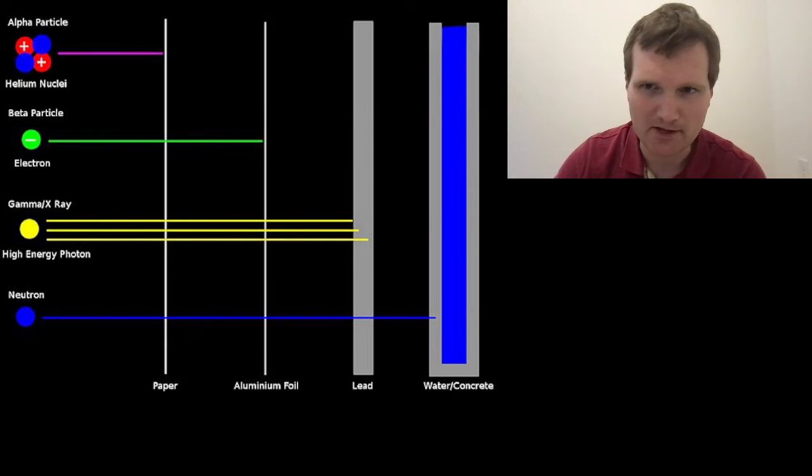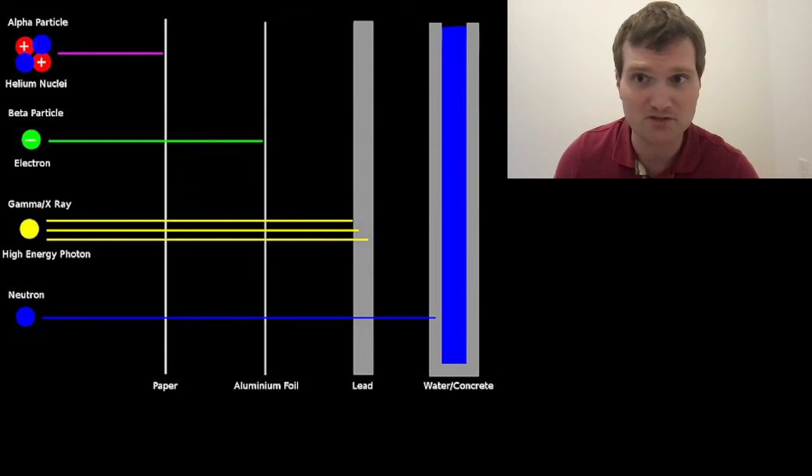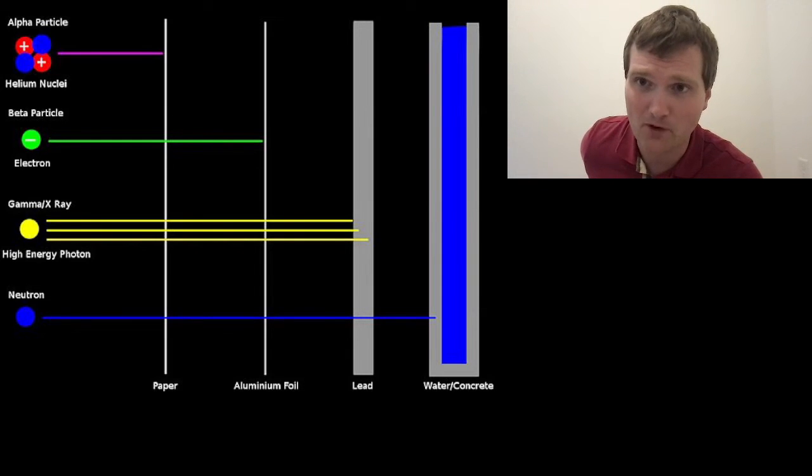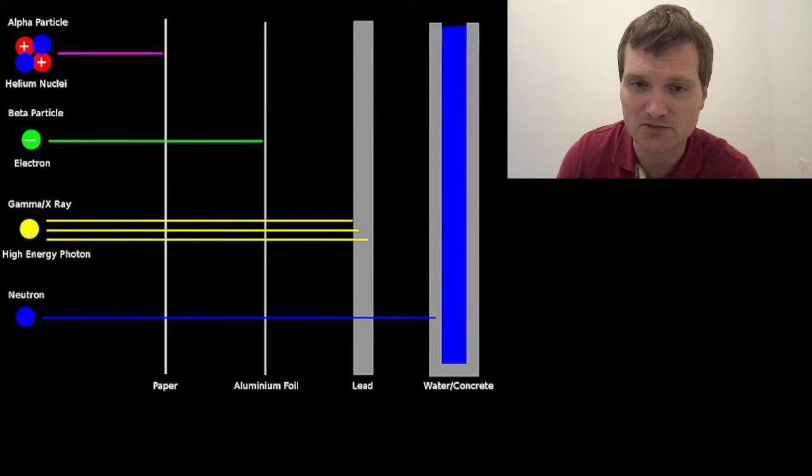And on the bottom there talks about neutrons. Neutrons, which are used in nuclear reactors to cause fissions, to ultimately produce electricity. You need water, concrete, hydrogenous material. Water molecules is what slows them down and absorbs the neutrons.